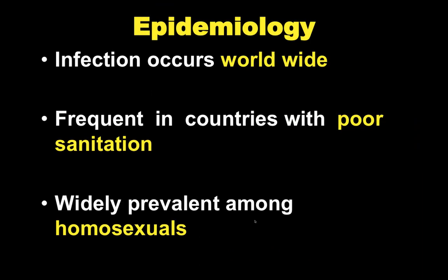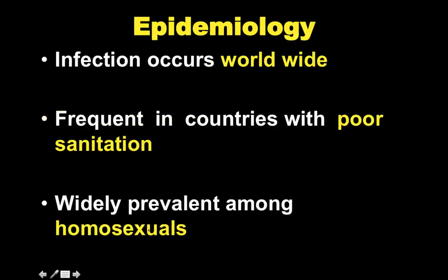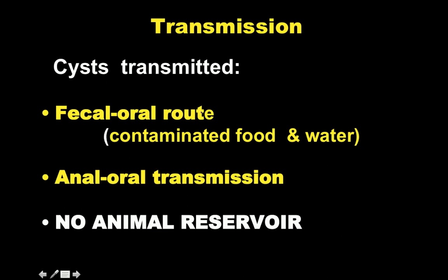Coming to its epidemiology, this infection is seen worldwide, most commonly in countries with poor sanitation like third-world countries, and it is widely prevalent among homosexuals. Mode of transmission is by cysts, and these cysts are transmitted by the fecal-oral route. The cysts contaminate food and water and are then transmitted to humans, or there could be anal-oral transmission seen in homosexuals.